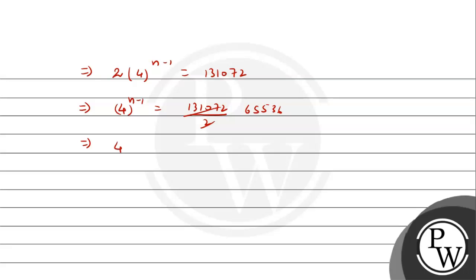Substituting a=2 and r=4, we get 2·4^(n−1) = 131,072, which simplifies to 4^(n−1) = 65,536. The power of 4 that equals 65,536 is 8, so we have 4^(n−1) = 4^8.